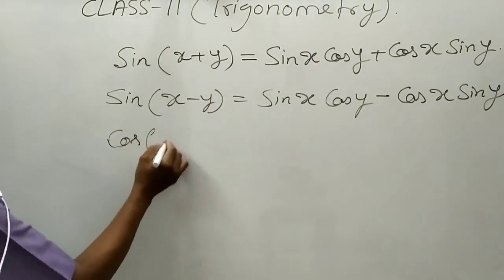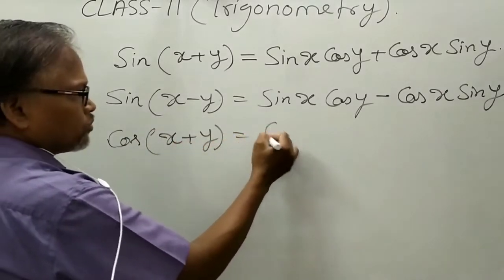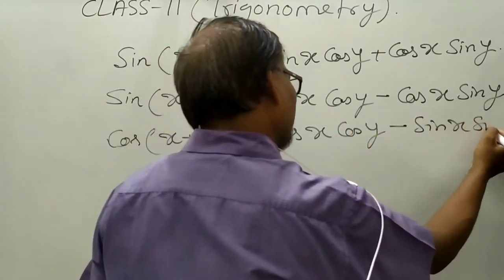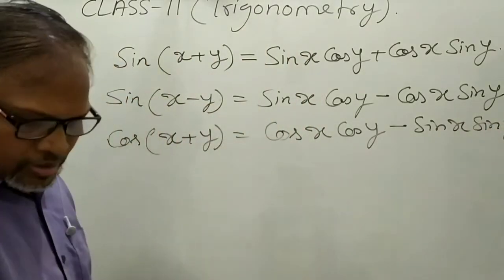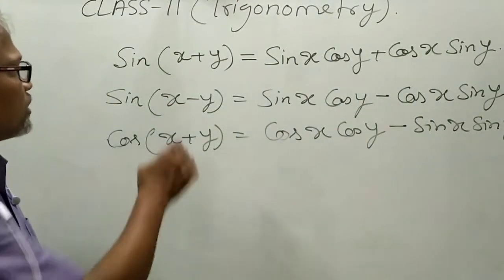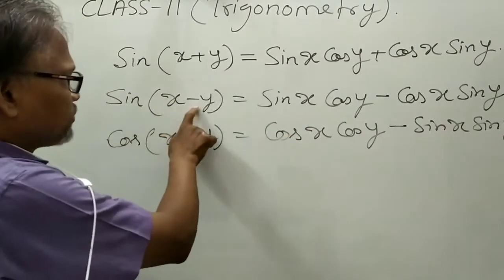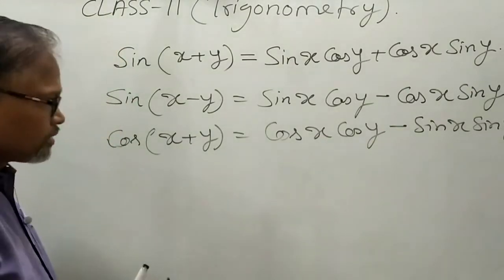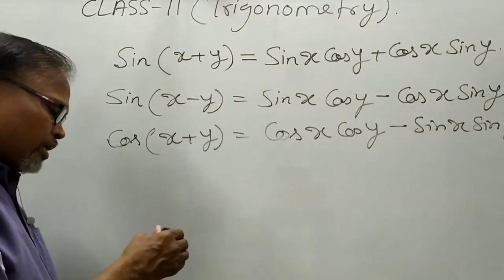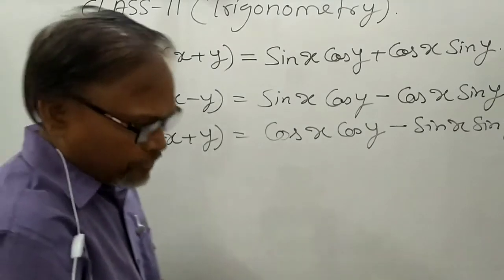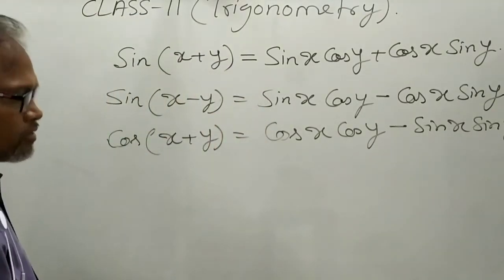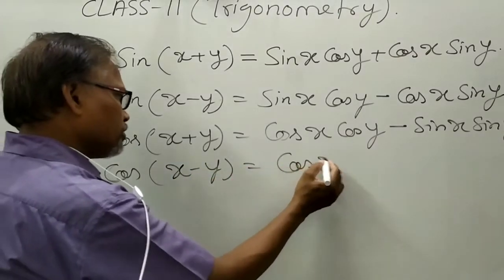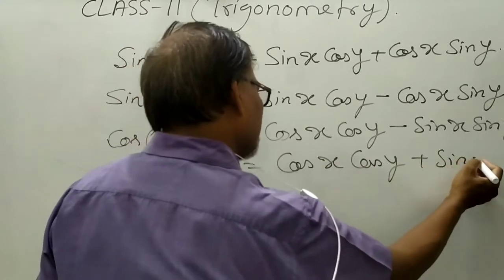Third formula: cos(x + y) = cos x cos y − sin x sin y. Notice that for sin(x + y) there is a plus sign, and for sin(x − y) there is a minus sign, but for cos(x + y) the sign is minus — so be cautious. Therefore, cos(x − y) = cos x cos y + sin x sin y.